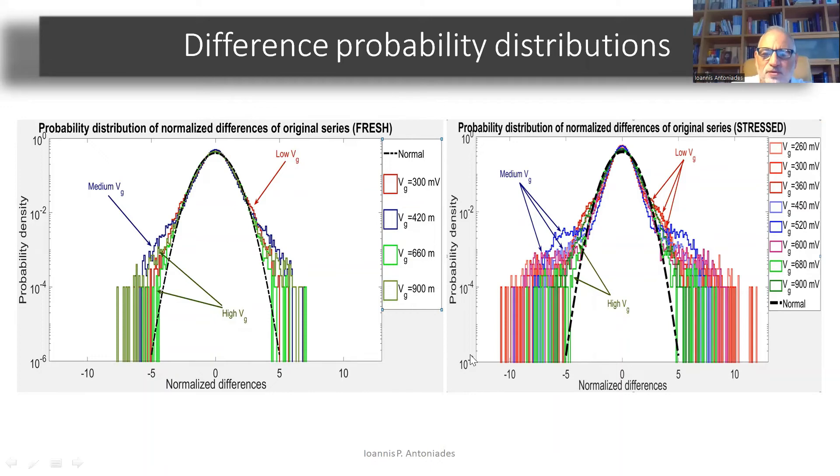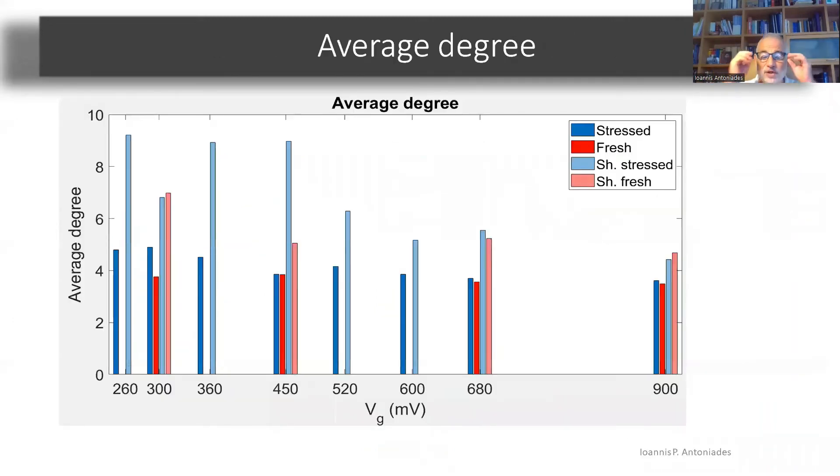Now, if you look at the average degree of the visibility graphs for various values of the gate voltage of these time series, comparison between stressed and fresh transistors, well, the stressed transistors had slightly higher degree than the fresh ones.